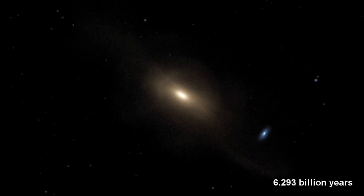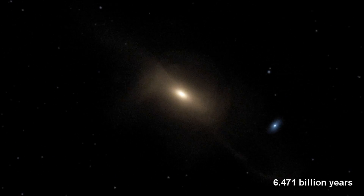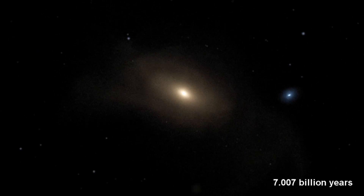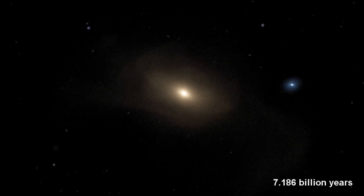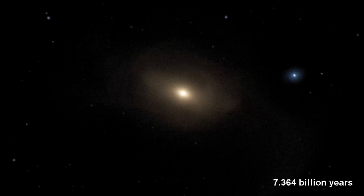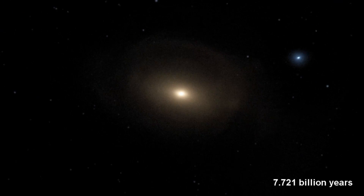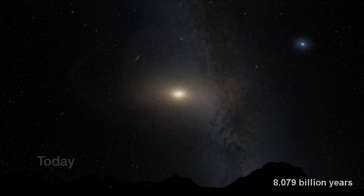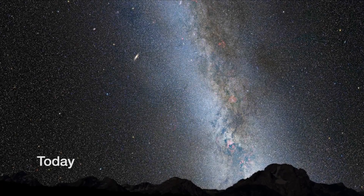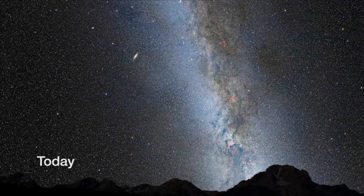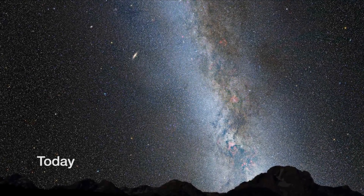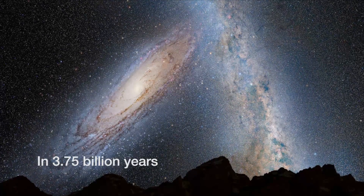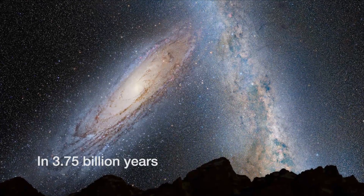Computer simulations derived from Hubble data show that it will take an additional 2 billion years or more after the encounter for the interacting galaxies to completely merge under the tug of gravity. They will reshape into a single elliptical galaxy, similar to the kind commonly seen in the local universe.